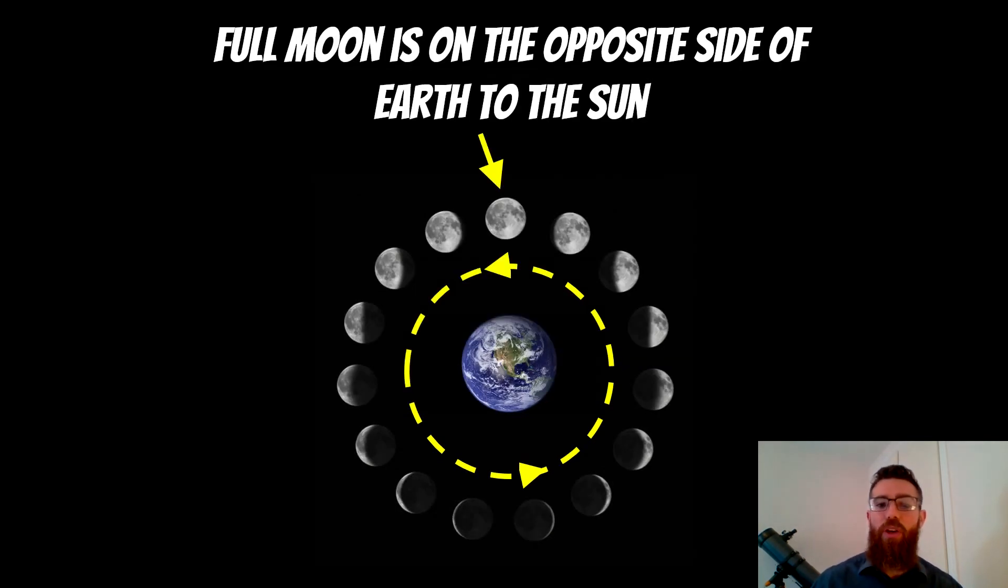Now the full moon occurs on the opposite side of the earth to the Sun because it has to be fully illuminated. The full moon is when it is 100% illuminated by the Sun, so it's reflecting light back to where we are, and it happens on the opposite side of the earth compared to the Sun. It should be fairly obvious why that should occur.